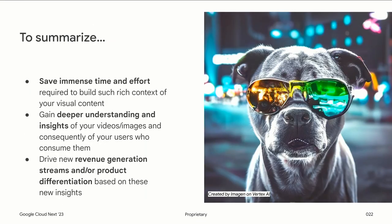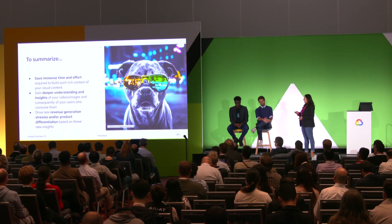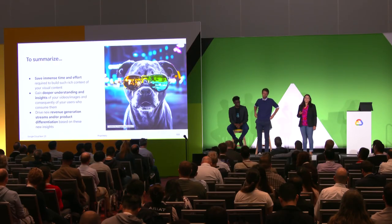To summarize: using the three features — image captioning, image Q&A, and video description — especially using them together, you can save immense time and effort in understanding the content you already have. Once you have that information, it helps you get deeper understanding and insight of not only the content but also how your customers are interacting with it. And all of this together, you could create new revenue generation streams or product differentiation. With that, I come to the end of my part of the session. I'd like to hand over to Tommaso, who will share how they are using these features to drive more personalization.